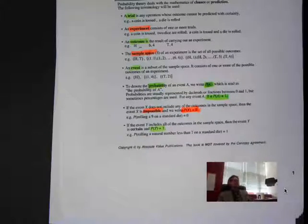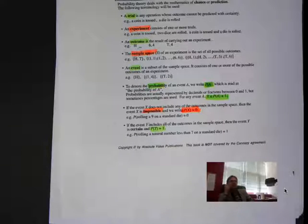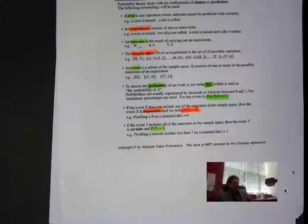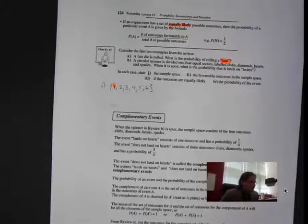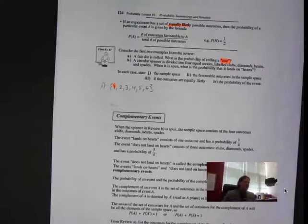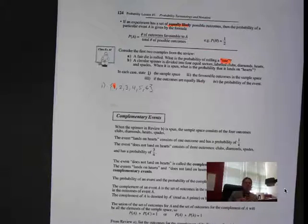If the probability equals one — for example, you have to pick between heads or tails on a coin — well, there's only heads and tails on a coin, so the probability of getting heads or tails is actually one. And if an experiment is equally likely, then the probability of a particular event is given by a formula.